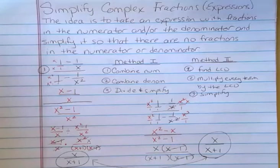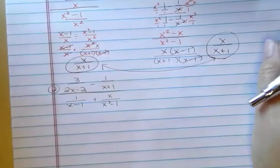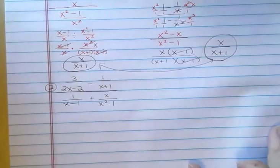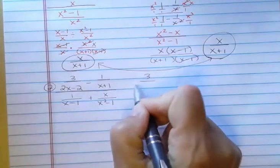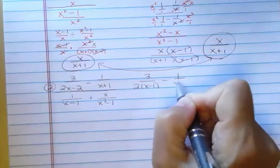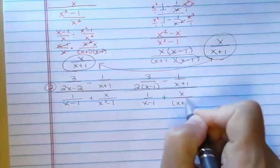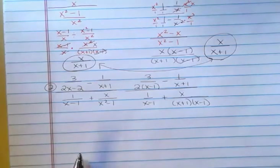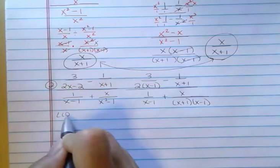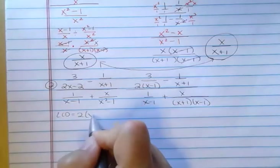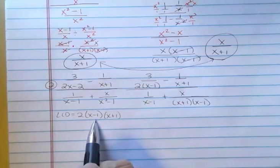Let's take a look at my second example. In this one, I'm going to use method two — find the least common denominator, multiply everything by it, and then see what happens. But first, before I can find the LCD, I need to factor everything. So I'm going to rewrite this as 3 over 2 times x minus 1, and I'm going to factor x squared minus 1 as x plus 1 times x minus 1. Now I'm going to find an LCD. For my LCD I need a 2, an x minus 1, and coming over here I see an x plus 1. Coming down here, I need an x minus 1 — already have it — and x plus 1 — already have it. So my LCD is 2 times x minus 1 times x plus 1, and everything gets multiplied by that.